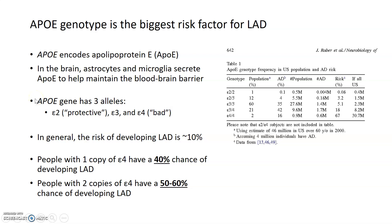The APOE gene has three different forms, or three alleles: an E2, an E3, and an E4 allele. The E2 allele, or this form of the APOE gene, is often found to be protective against Alzheimer's disease. The E3 allele seems to be relatively neutral and doesn't contribute to Alzheimer's disease risk either way. Whereas the E4 allele is the bad allele, and having the E4 allele increases your risk of developing late-onset Alzheimer's disease.